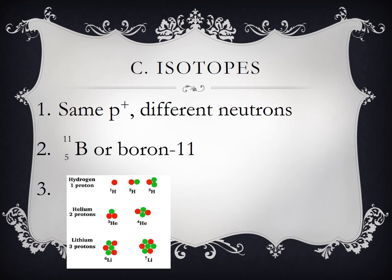Isotopes, same number of protons, but different neutrons. They can be written in two ways. You can write boron with the nucleon number on top with the protons on the bottom, or you can write boron-11 because you can find what the protons are looking on the periodic table. And then you can also draw them out with the different protons and neutrons as you can see in number three. We talked about hydrogen, helium, and lithium.